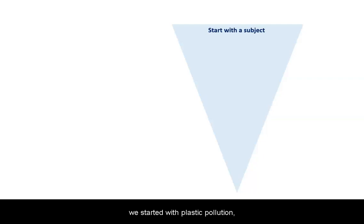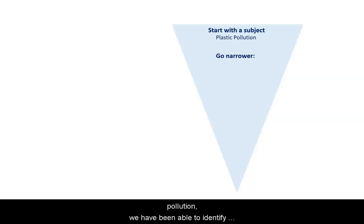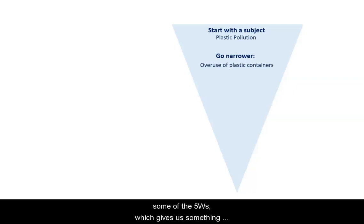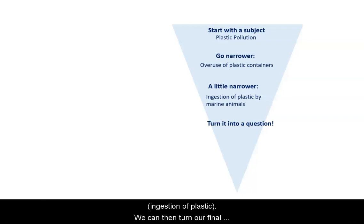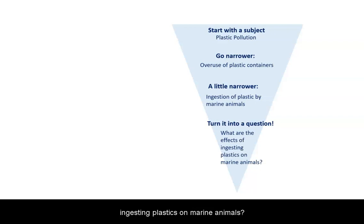Here, we started with plastic pollution. Then, after doing some pre-research on plastic pollution, we were able to identify some of the five W's, which gives us something much better to work with. In this case, we added a who — marine animals — and a what — ingestion of plastic. We can then turn our final research topic into the question: what are the effects of ingesting plastics on marine animals?